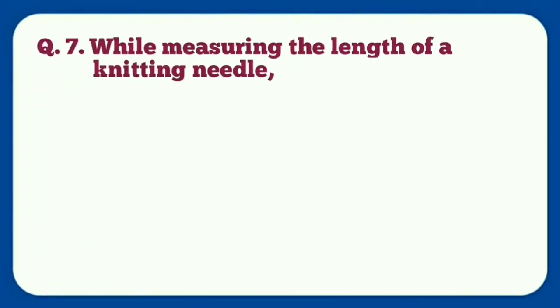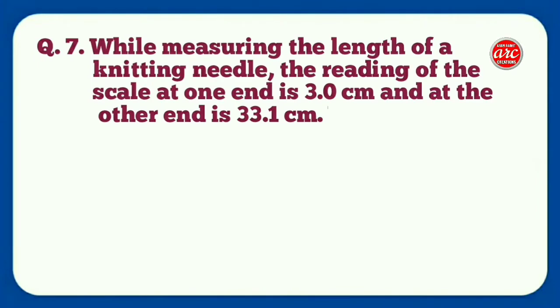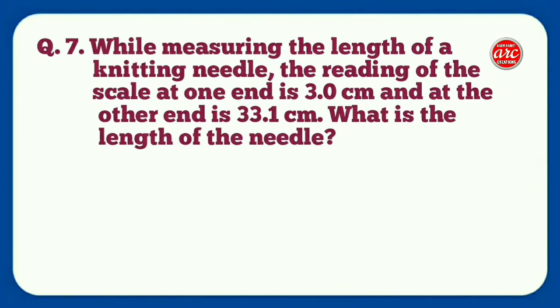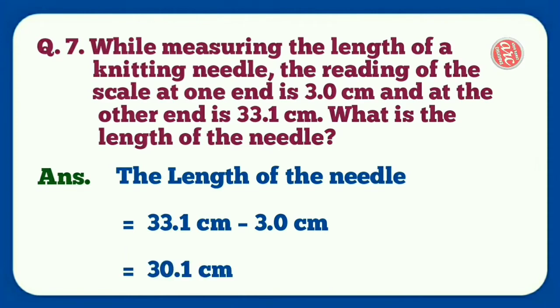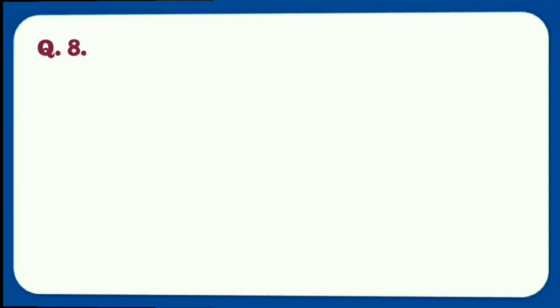Question number seven: While measuring the length of a knitting needle, the reading of the scale at one end is 3.0 centimeter and at the other end is 33.1 centimeter. What is the length of the needle? Answer: The length of the needle is equal to 33.1 centimeter minus 3.0 centimeter, that is equal to 30.1 centimeter.